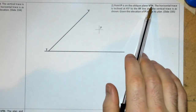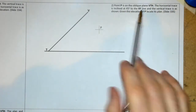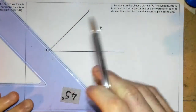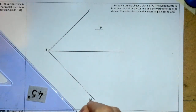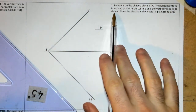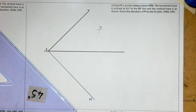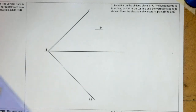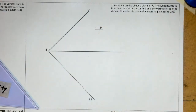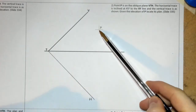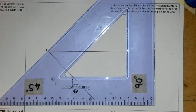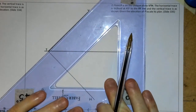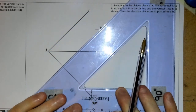Question two: point B is on the oblique plane VTH. The horizontal trace is inclined at 45 degrees to the XY line — so we put in our horizontal trace at 45 degrees. The vertical trace is as shown. Given the elevation of P, locate it in plan. This is like the last question but in reverse — we go parallel to our vertical trace, taking a vertical cut section. The line from P parallel to the vertical trace is the cutting plane.